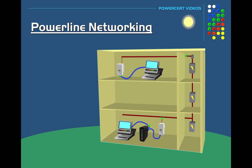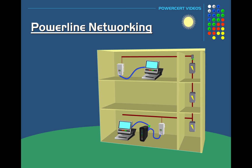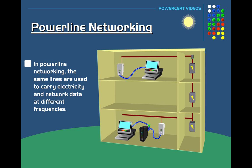Powerline networking works similar to DSL technology, because in DSL the same phone line is able to carry both data and voice but they are on different frequencies. This is very similar to how powerline networking works, where the same lines are used to carry electricity and network data at different frequencies.